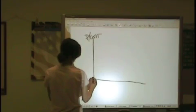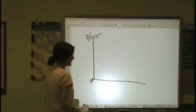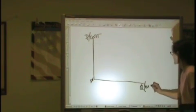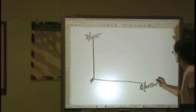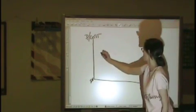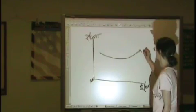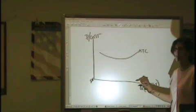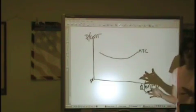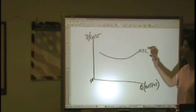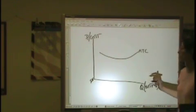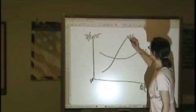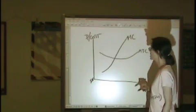Price on the axis again — we'll put in our P0 just for one. We want output on the bottom. Average total cost, then marginal cost. You could just draw this as a straight line; I've seen it done different ways in different books. Just remember that it needs to be upward sloping. Marginal cost — and that's enough.